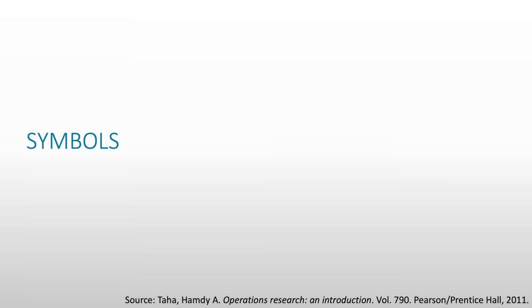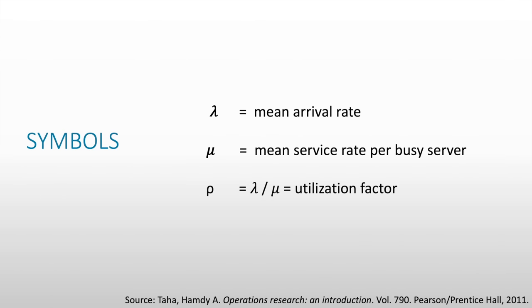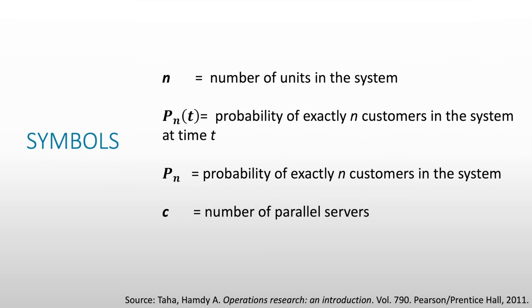So what are the different symbols usually used in queuing theory? First, we have the small letter lambda, which is the mean arrival rate. Then the small letter mu, which is the mean service rate per busy server. And then the small letter rho, which is equal to lambda divided by mu — our utilization factor or traffic intensity per busy server. We also have letter N, which is the number of units in the system. And P sub N of T is the probability of exactly N customers in the system at time T. P sub N is the probability of exactly N customers in the system.